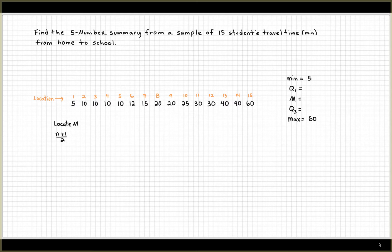But in this case, to find the median, it's best to use the (n+1)/2 to find the location of the median. What's n? Well, that's 15 data points plus 1 divided by 2, which means it's the 8th position. That means the median is 20.